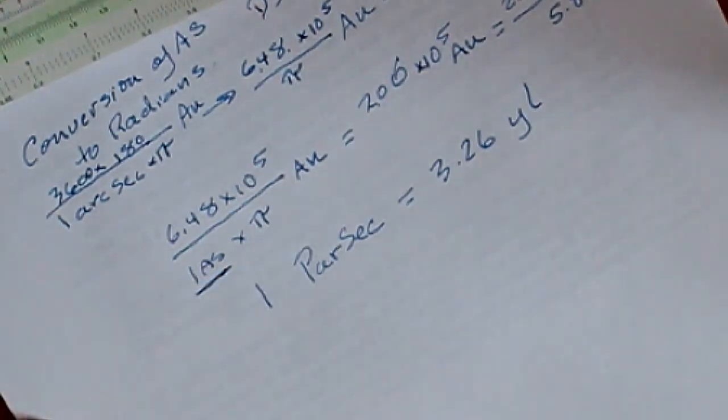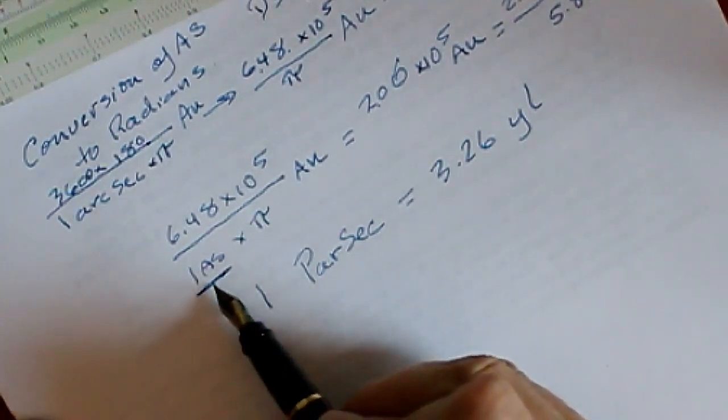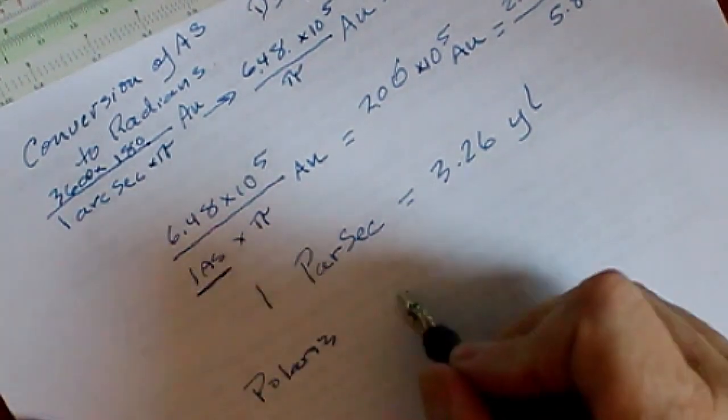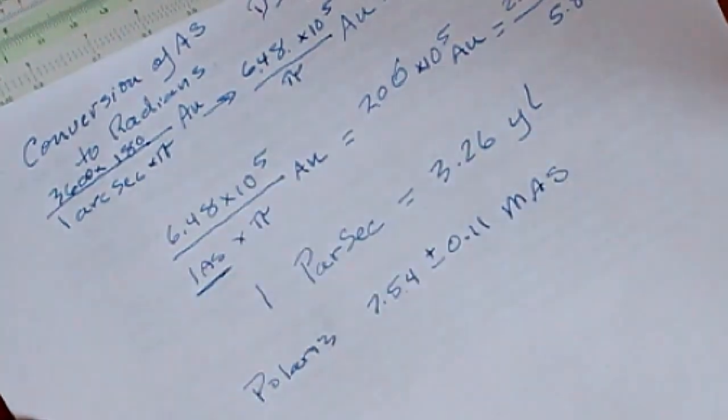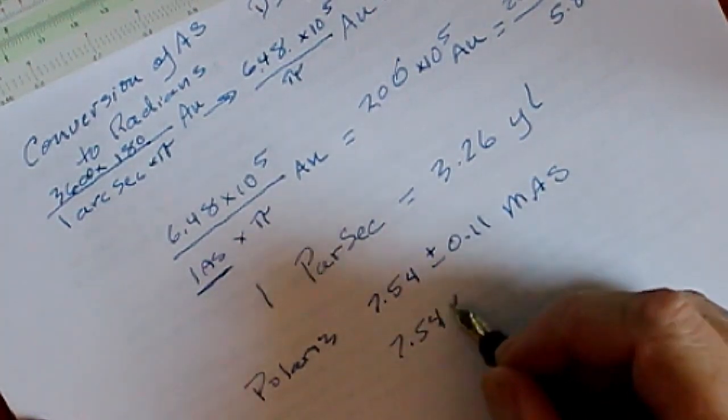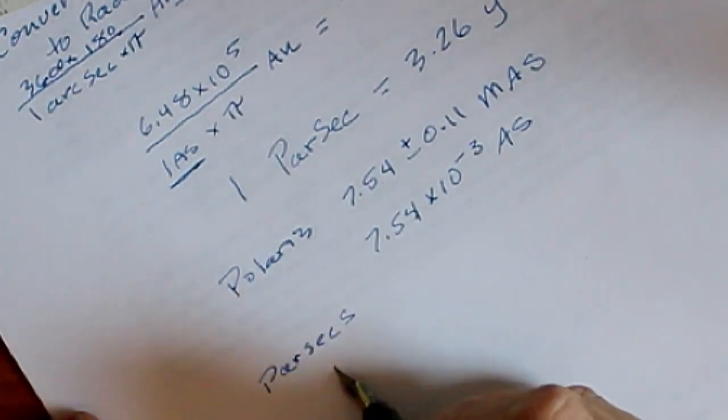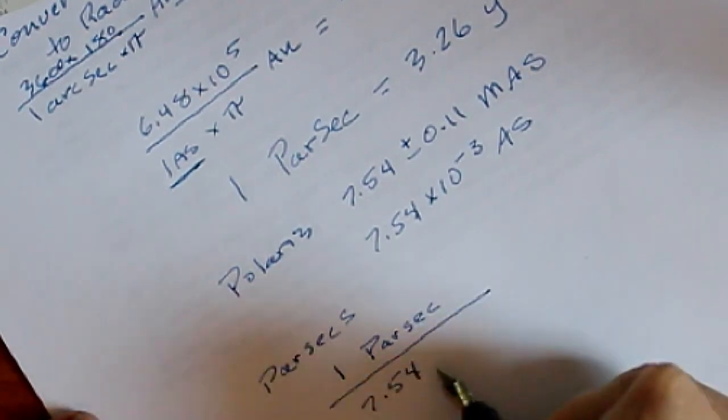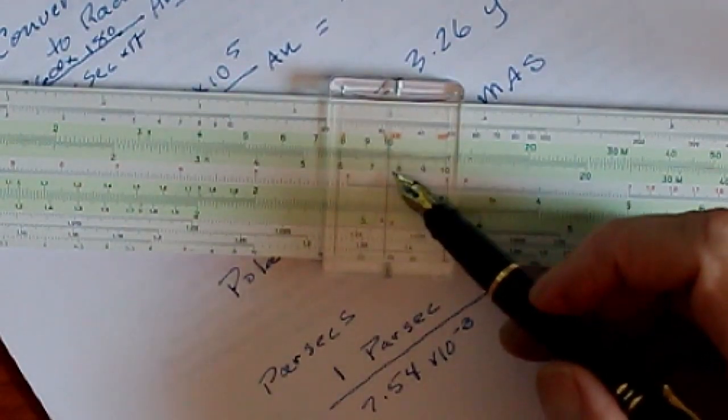Now, right here, we've got one arc second, but what if the parallax to the star is not one arc second? What we would do then would be to substitute the actual number of arc seconds for this one. So let's take an example, Polaris is 7.54 plus or minus 0.11 milli arc seconds. That's the parallax of Polaris. Now 1 milli arc second, that means that this is 7.54 times 10 to the negative 3 arc seconds. So to find parsecs, we would take 1 parsec and divide it by 7.54 times 10 to the negative 3.